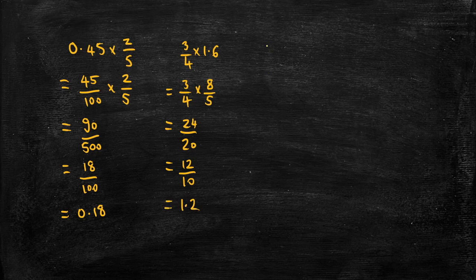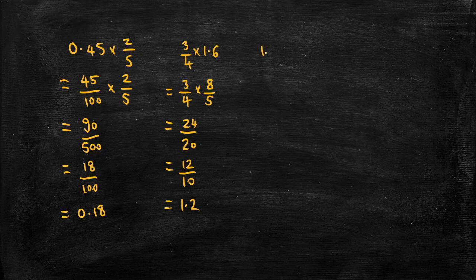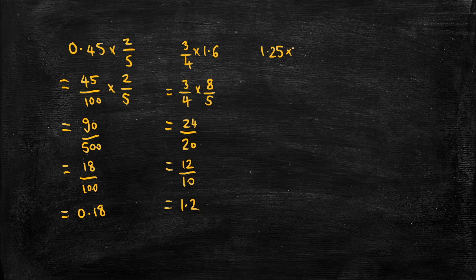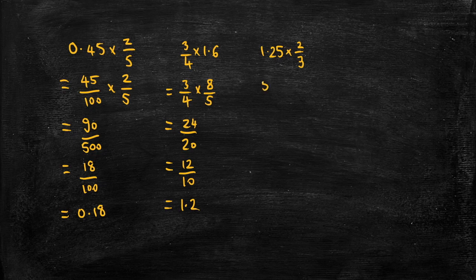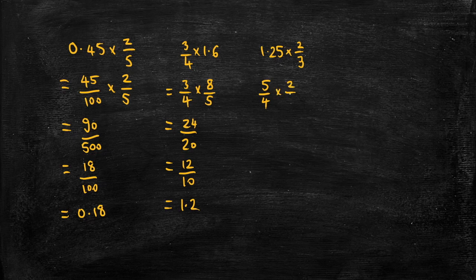And then last example, let's do 1.25 times 2/3. 1.25 as a fraction. Well, there's a few ways we could do this but the simplest is probably just to write 5 over 4. Multiply that by 2/3.